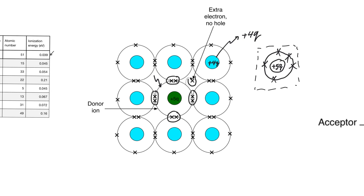This free electron that was freed from the donor atom does not leave behind a hole, because a hole is defined as an empty location in a covalent bond. If you look here, all four covalent bonds are intact — they are still there. So this electron was formed without the creation of a corresponding hole. This doesn't mean that holes are not created in this kind of structure. Sometimes some of the covalent bond electrons will also become free, leaving behind holes. This is the thermal generation mechanism which still exists. However, the proportion of electrons created this way is much smaller than the proportion created from donor atoms.